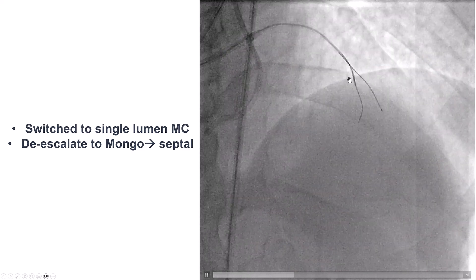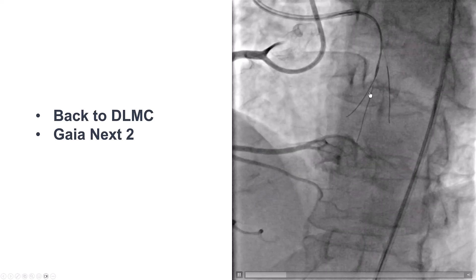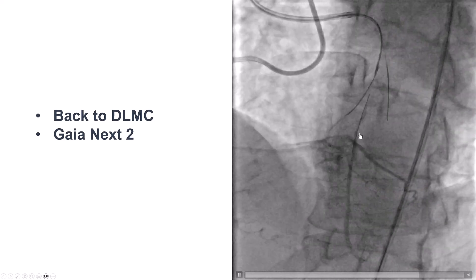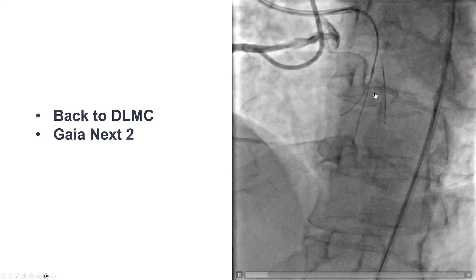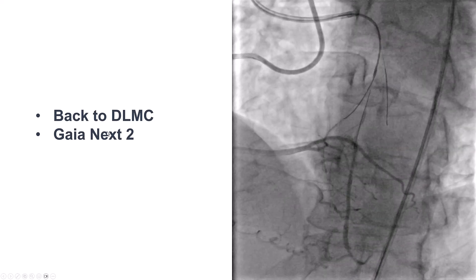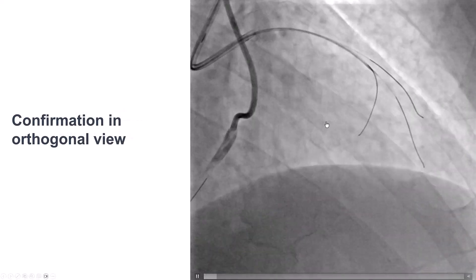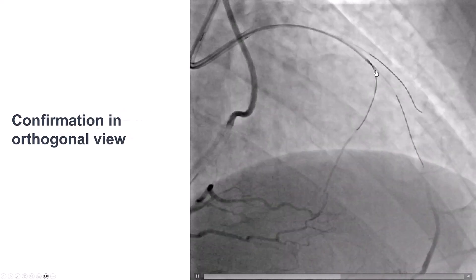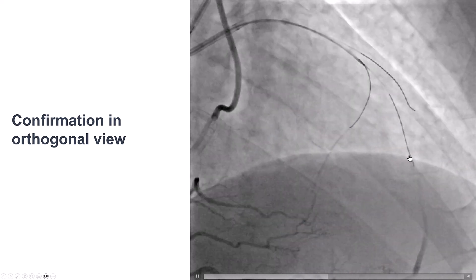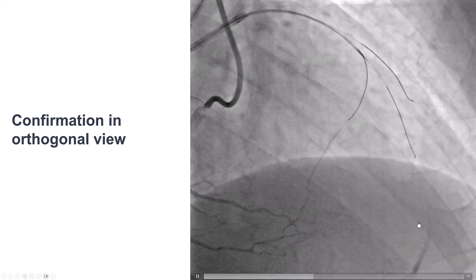In this particular case, we escalated with a Gaia-NX2 and then de-escalated using a Gladius Mongo wire. We then performed the contralateral injection and saw that we were in the extra-plaque position. The question was: do we use a Stingray for re-entry, or do we try parallel wiring? We decided to do the latter, so we used the Recross microcatheter again with a Gaia-NX2 to redirect the second wire, and we were able to advance that wire into the true lumen. A trick for confirming true lumen is to inject contralaterally and advance the wire to see if it moves easily within the vessel lumen.